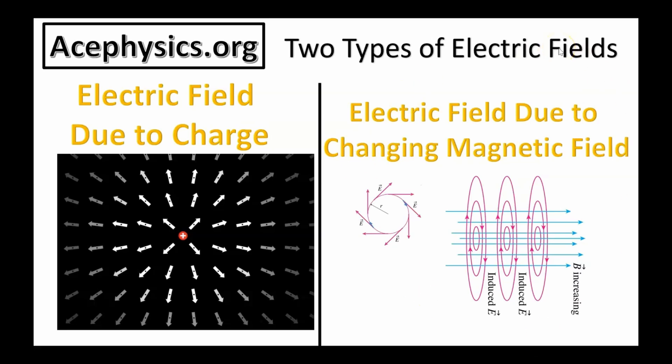The second way an electric field is created is by a changing magnetic field, which generates an electric field. These electric field lines loop around the changing magnetic field.